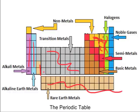Electronegativity in general is highest over here and lowest over here on the periodic table, increasing in that direction. As a general rule, if atoms are far apart on the periodic table and both are not metals, then they most likely form ionic bonds.